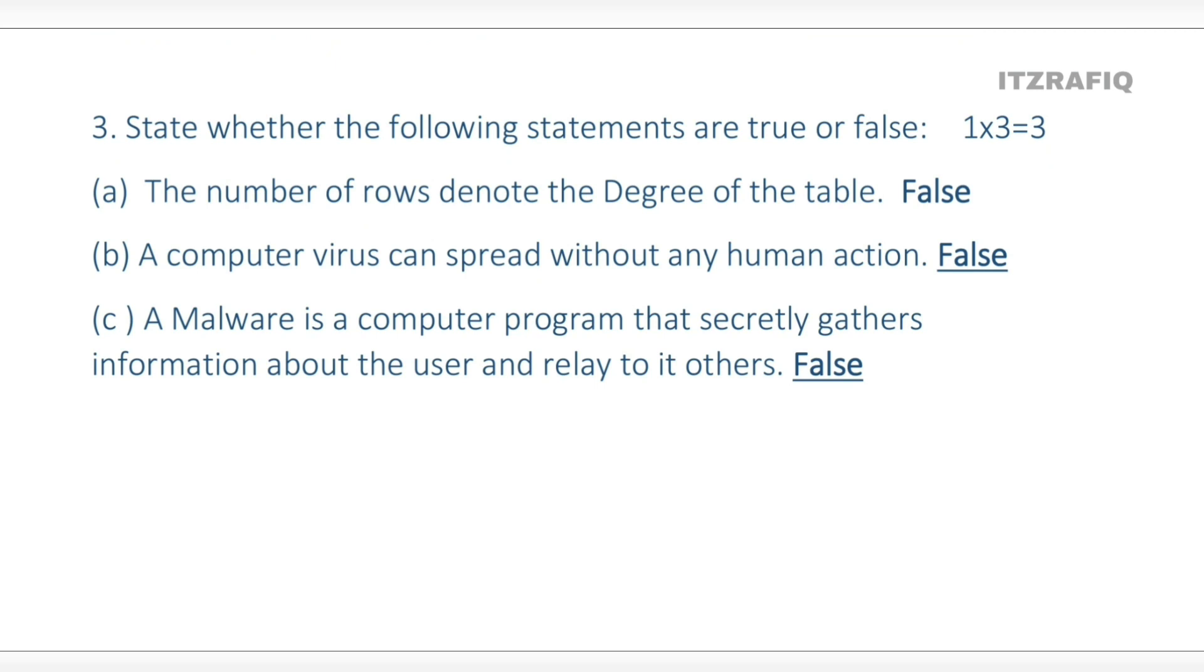Number of rows denote the degree of the table - this is false. Number of columns is actually the degree of the table; number of rows is the cardinality of the table.